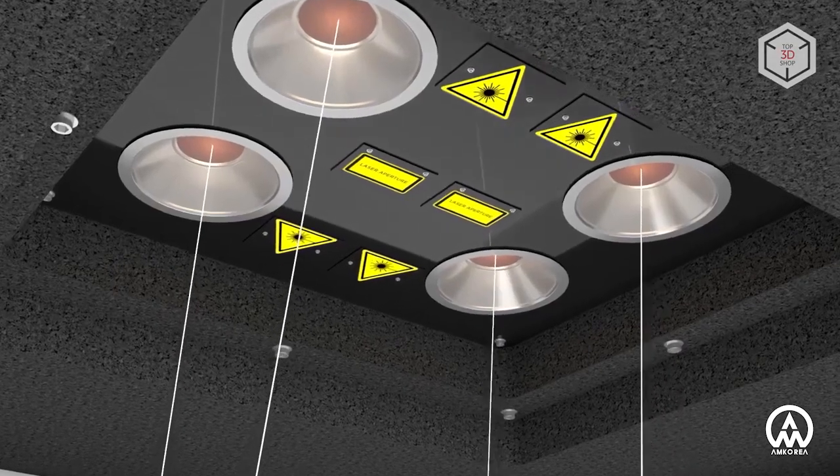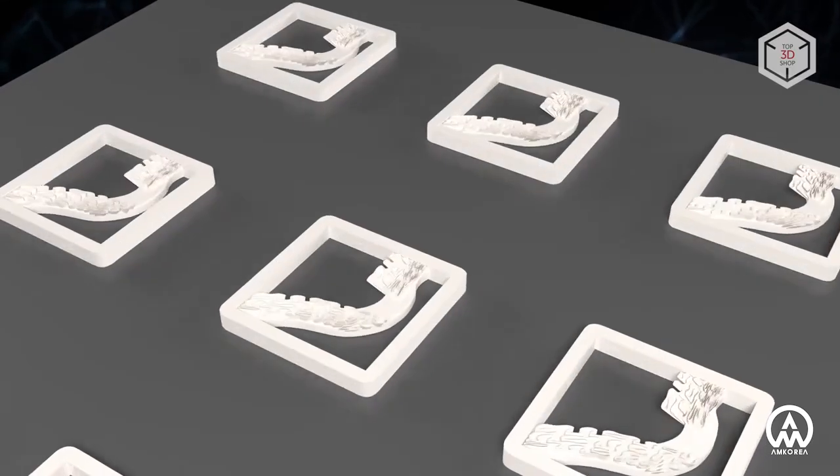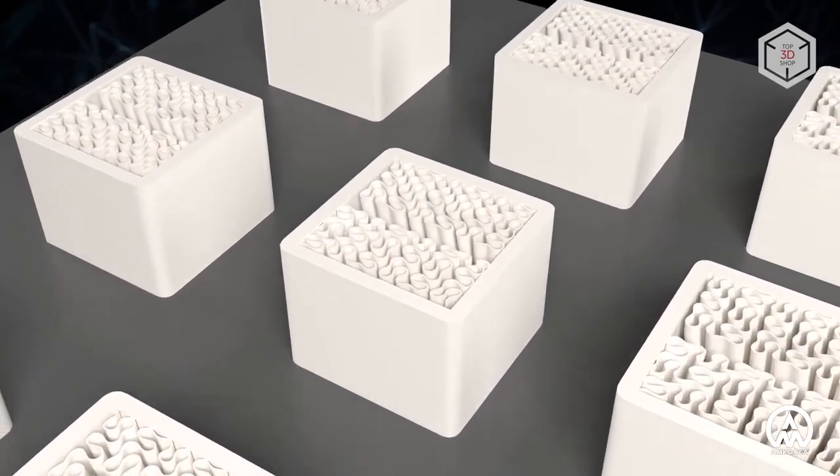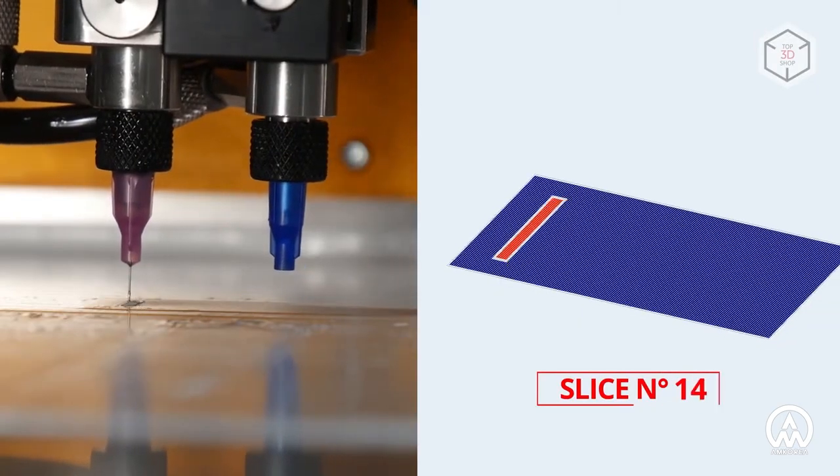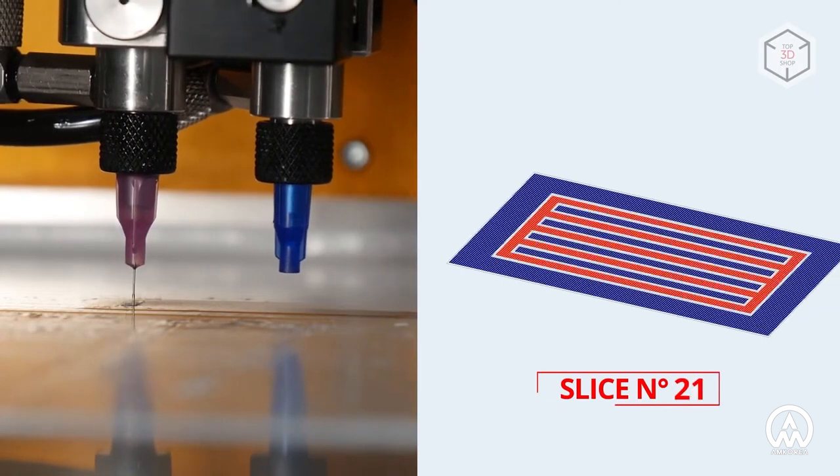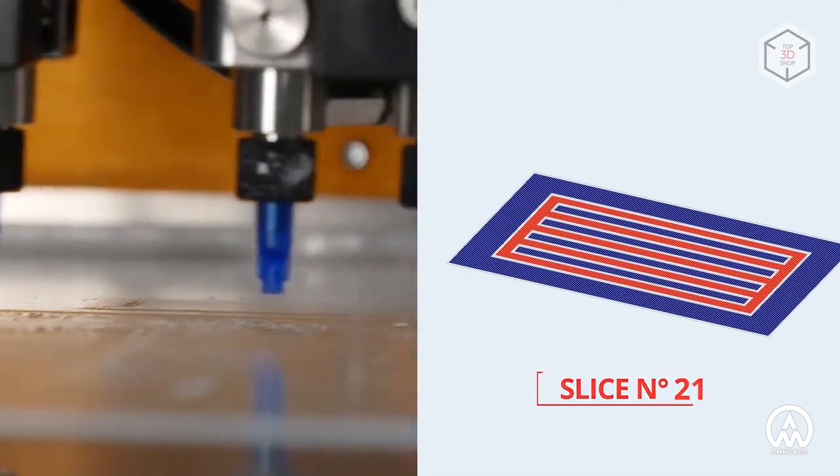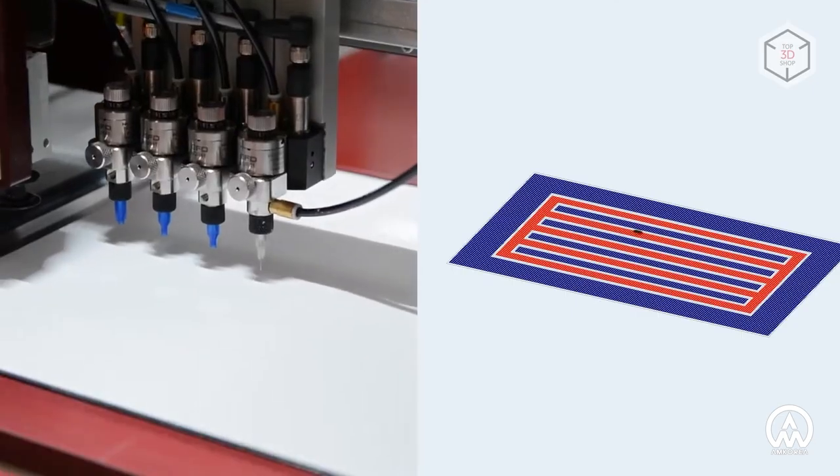The largest model in the line, the C3600 Ultimate, has four lasers that work simultaneously to speed up the printing process. Hybrid units allow creating 3D objects from two or three ceramic pastes, alternating layers of materials to obtain different properties in the finished product.